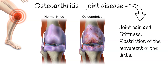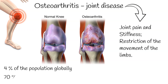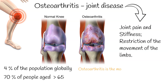Osteoarthritis is quite a common disease. It affects around 4% of the population globally, but it occurs in around 70% of people aged 65 or more. Osteoarthritis is the most common form of arthritis in the world.